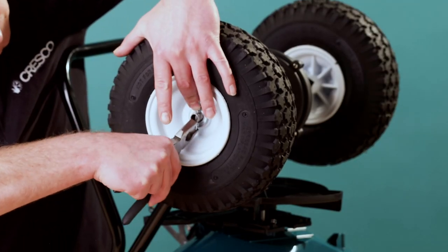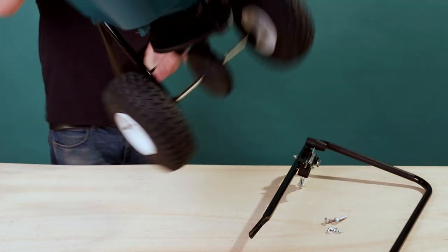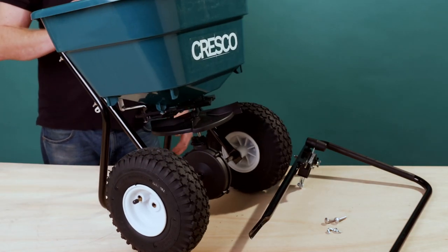Use the pliers to split the cotter pins on both sides. Flip the spreader onto its wheels and ensure they work correctly.